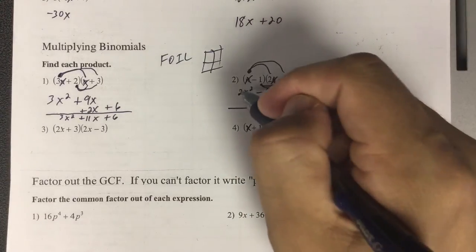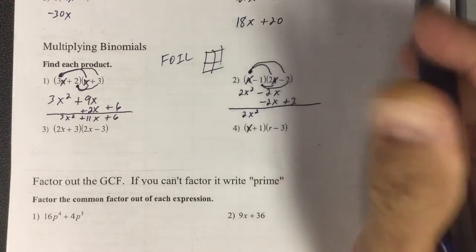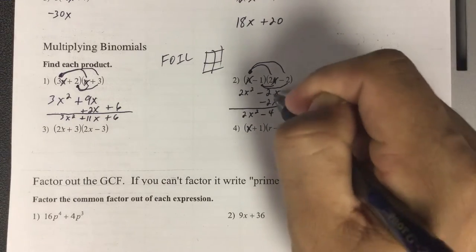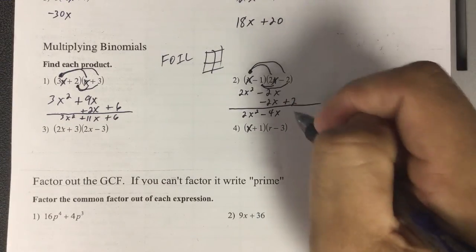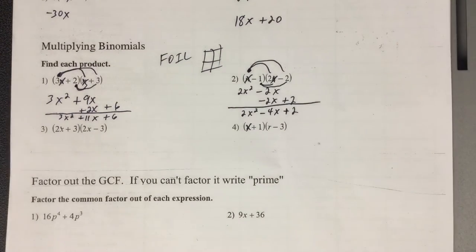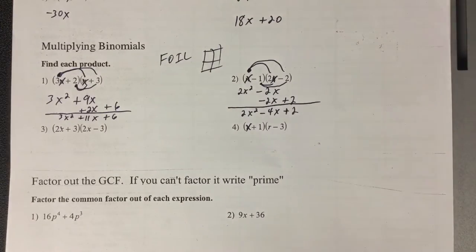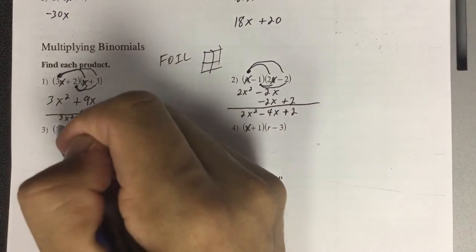Draw my line. So I have the 2x squared. Negative 2 and negative 2 is negative 4x. And then plus 2. So that makes it, again, very easy just keeping things organized. That's the idea, is to keep everything organized.